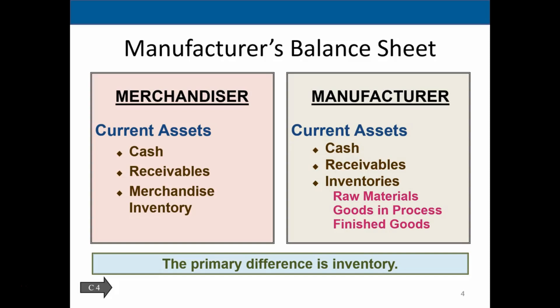Looking at the manufacturer's balance sheet, we compare the merchandiser to the manufacturer. The balance sheet has assets, liabilities, and owner's equity. In the assets section, a manufacturer has cash, receivables, and then the account called merchandise inventory. That's the key difference between a service company and a manufacturer — now we have inventory, whereas a service company would not.